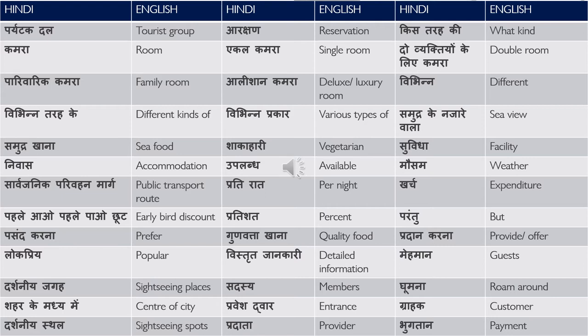Now they are describing what type of rooms they have. एकल कमरा — single room. दो व्यक्तियों के लिए कमरा — double room. If there is a triple room, you should say तीन व्यक्तियों के लिए कमरा. पारिवारिक कमरा — family room. आलिशान कमरा — deluxe or luxury room. You can also call a luxury suite आलिशान कमरा.